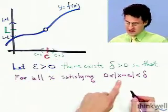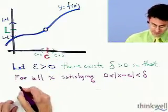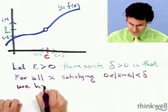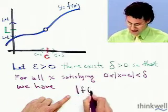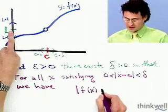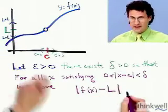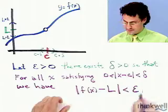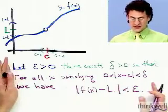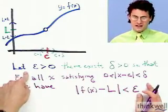Then for every single x satisfying that, we have that f of x is going to be really close to L. The distance between f of x and L will be less than epsilon.